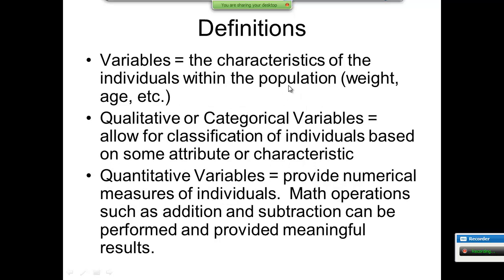Now, variables. This is the characteristics of the individuals within the population: weight, age, etc. We have two different types of variables: qualitative, which is categories, and quantitative, which is the numerical measure of some sort. A numerical measure that makes sense.